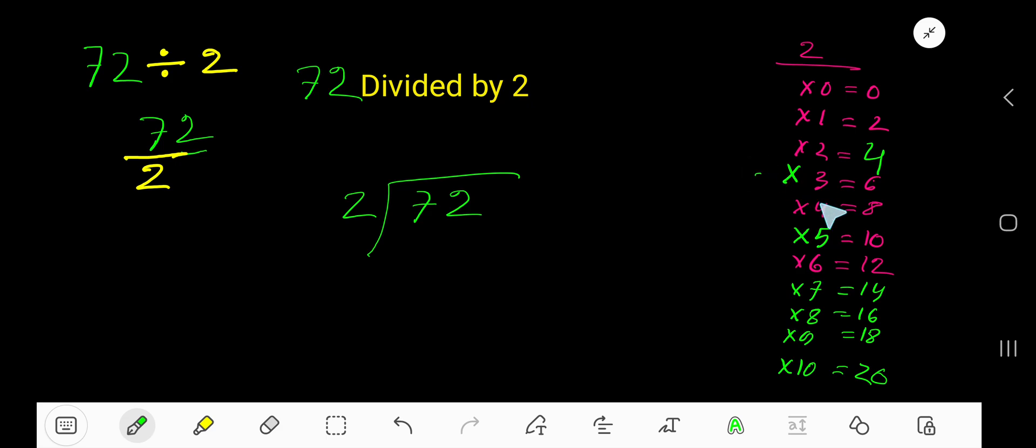Four? Two times four eight, which is greater, so three times. Two times three six. So two goes into seven how many times? Three times, right. Three times two six, subtract, you are getting one.